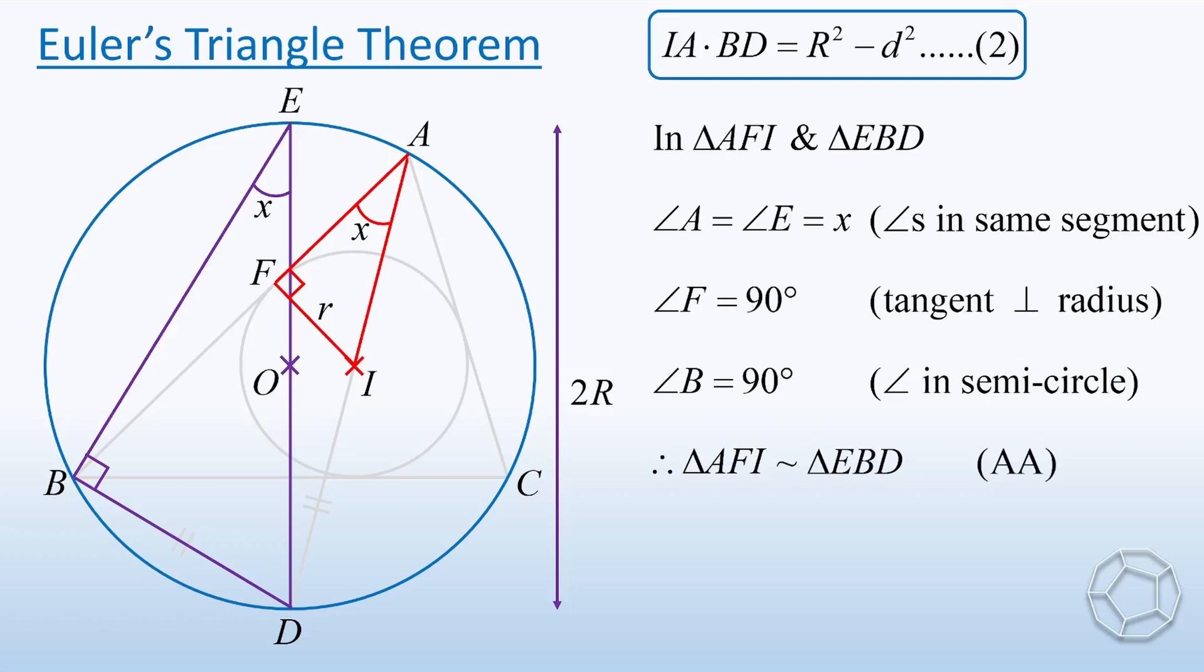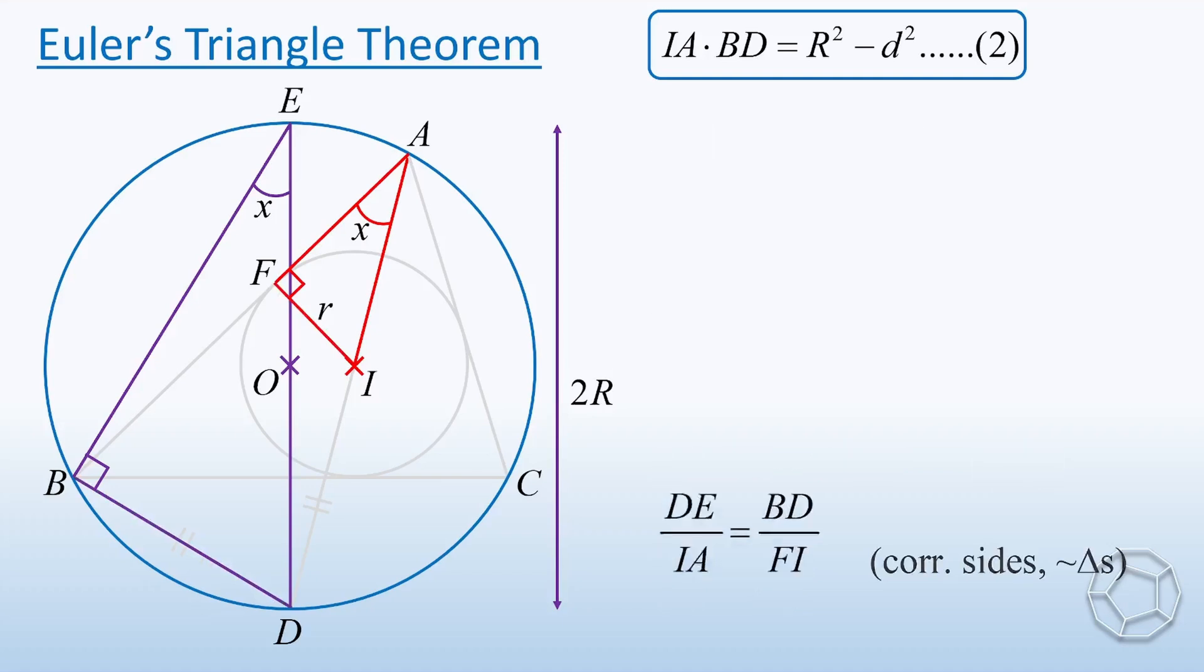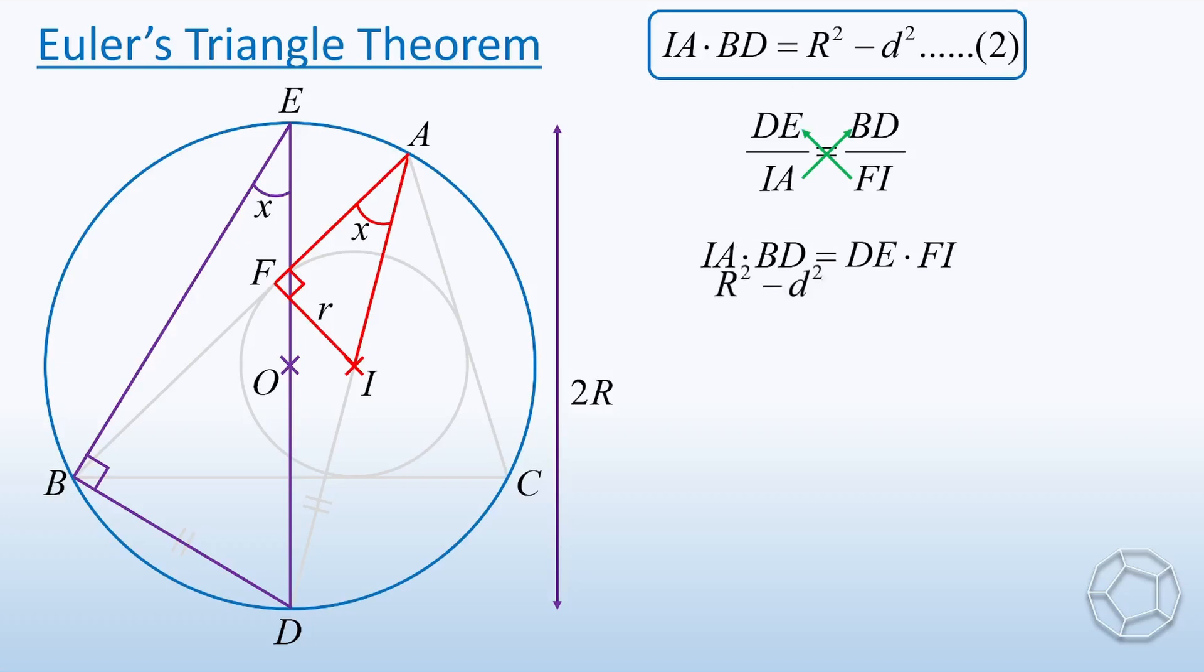Now we consider two pairs of sides with equal ratio. They are DE over IA is equal to BD over FI. Just like what we did in step one, cross-multiply the equation again. Therefore, IA times BD is equal to DE times FI. The left-hand side is exactly the same as equation two. It is R² minus d².